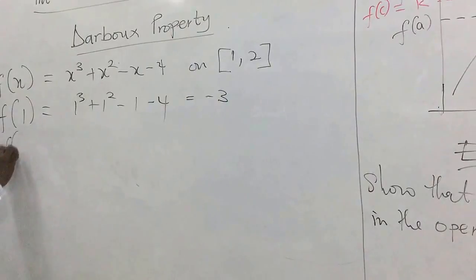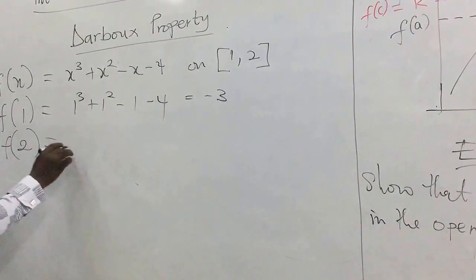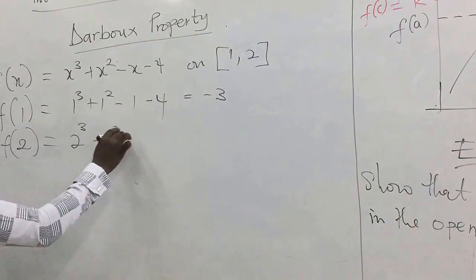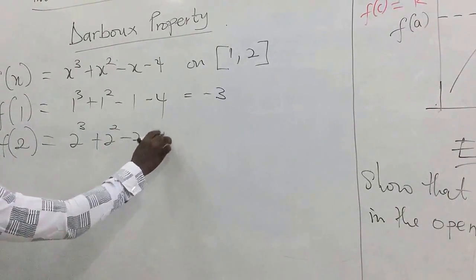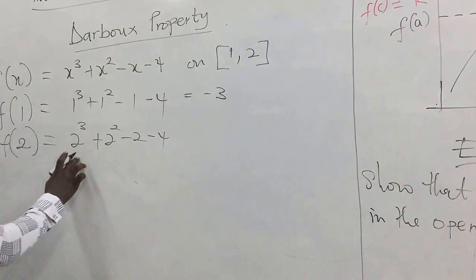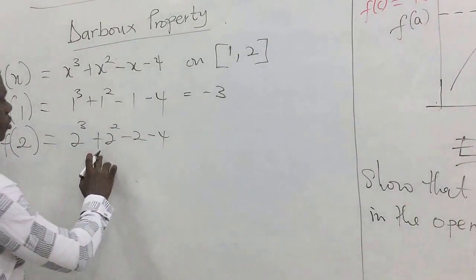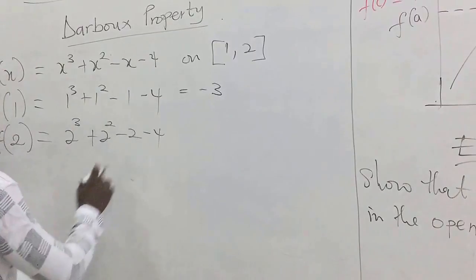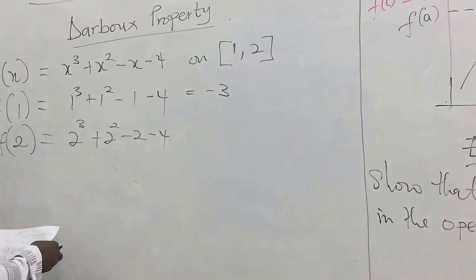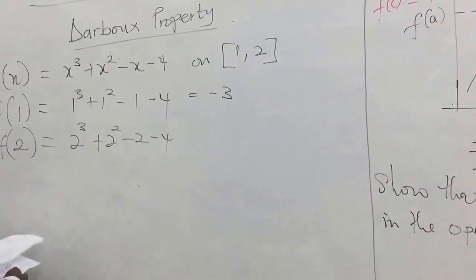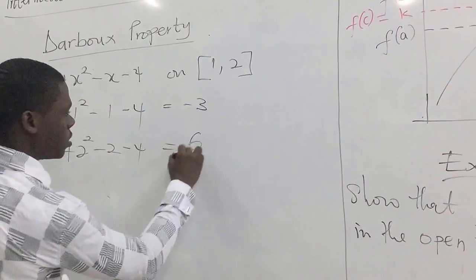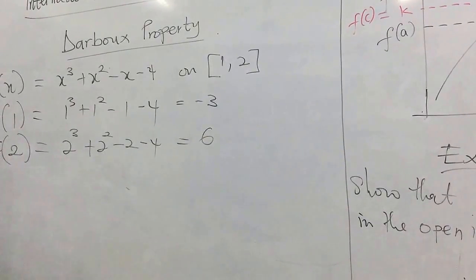We also have f(2): 2³ + 2² - 2 - 4. That gives us 8 + 4 - 2 - 4, and let's see what we're getting there — this gives us six.